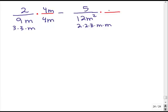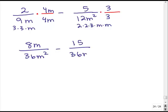So in the numerator, I've got 8m over 36m squared minus 15 over 36m squared, and then we just subtract the numerators, and then we see if we can cancel, we can't, because we can't factor anything to cancel, so that's our answer.